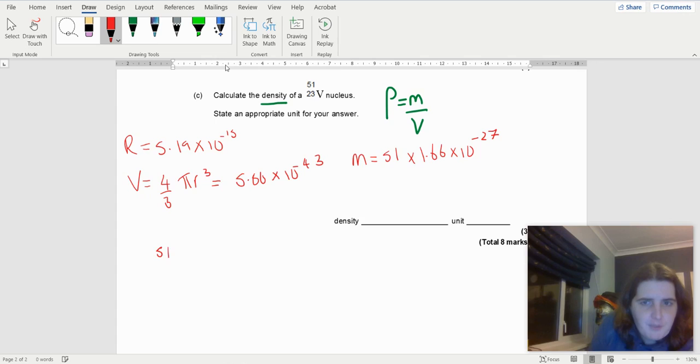So I've got my mass is 51 times 1.66 × 10⁻²⁷, all over my volume, which is 5.86 × 10⁻⁴³.